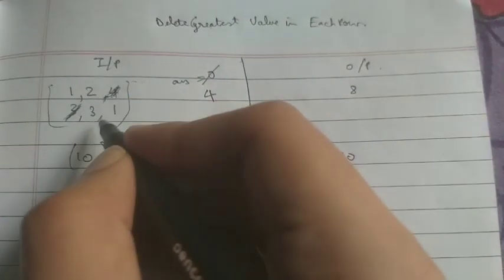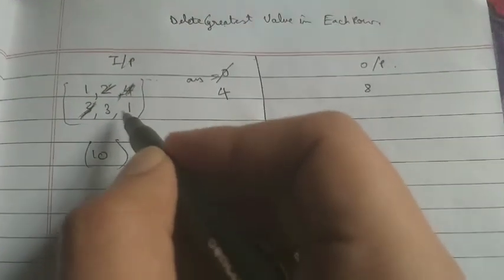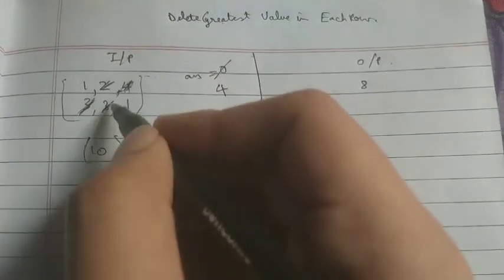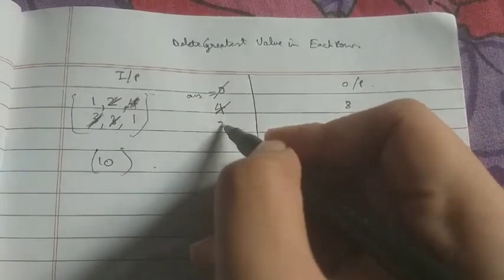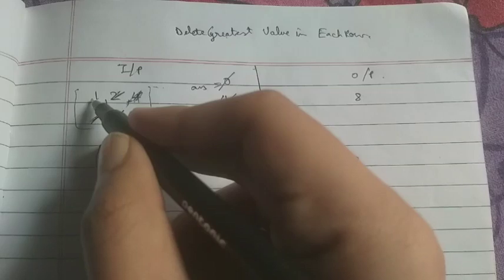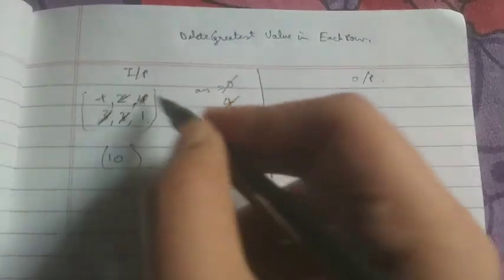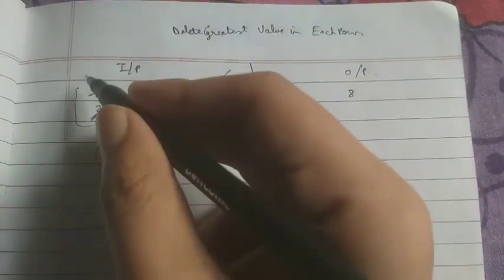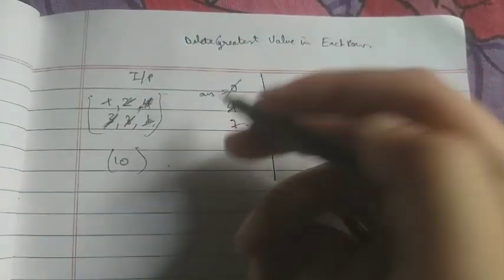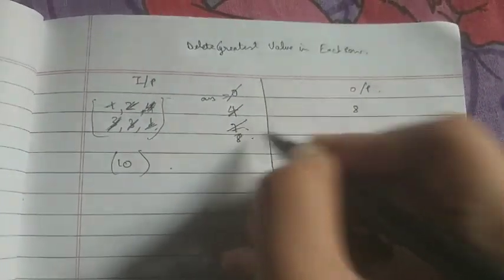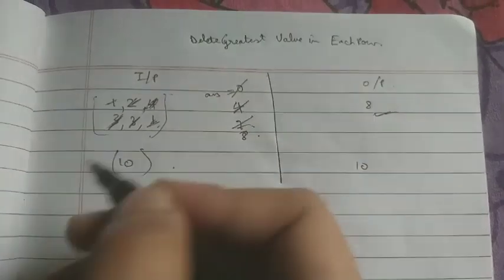Answer is initialized to 0, so we add 4. Now again we do the same thing: 3, 1, and 2 — 2 is greater than 1, and 3 is greater than 2, so 3 is greater. So 4 plus 3 equals 7. Then 1 and 1 — 1 is the greatest in both rows, so 7 plus 1 equals 8. The answer is 8. For a single-element row like 10, 10 is the answer.